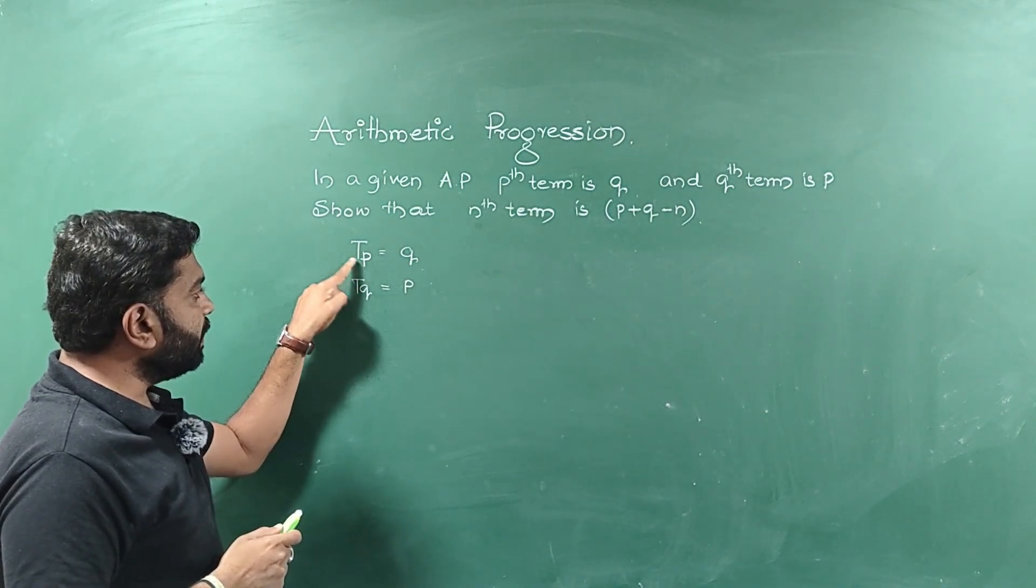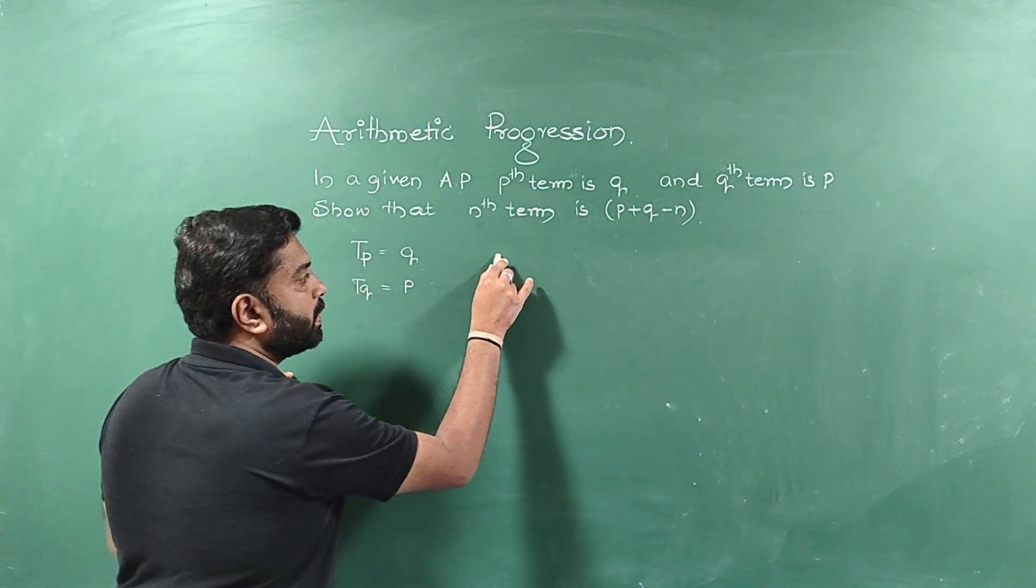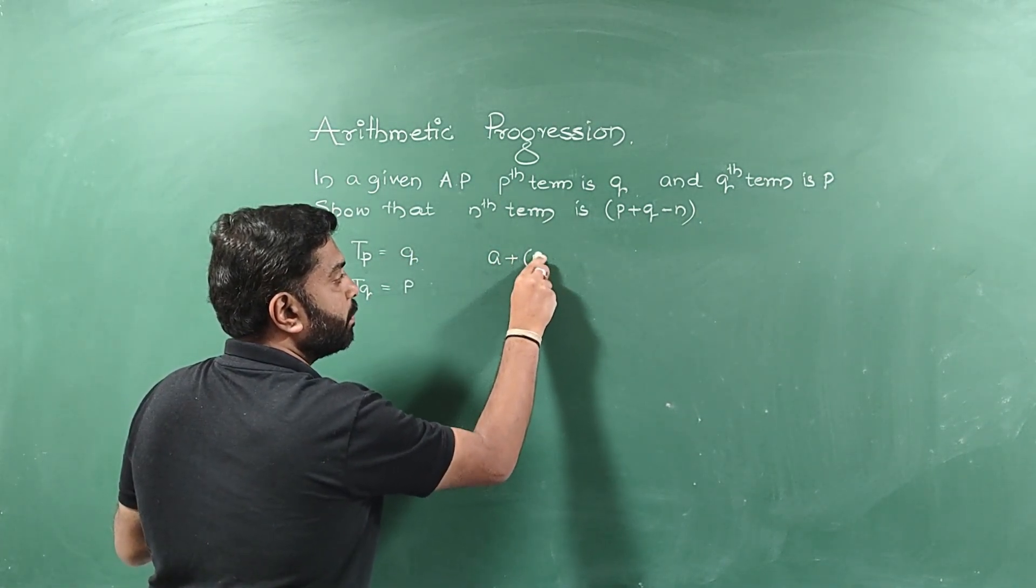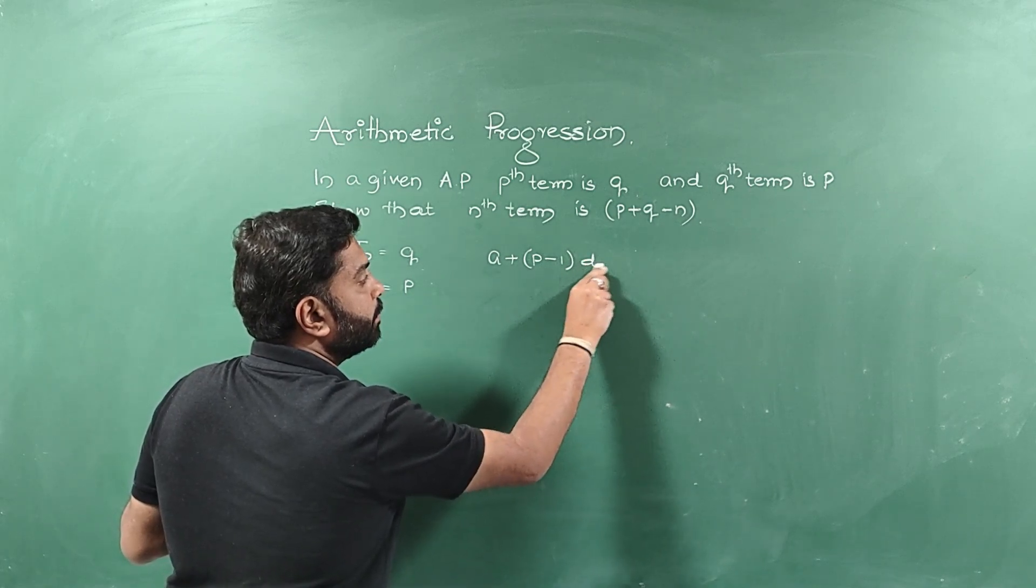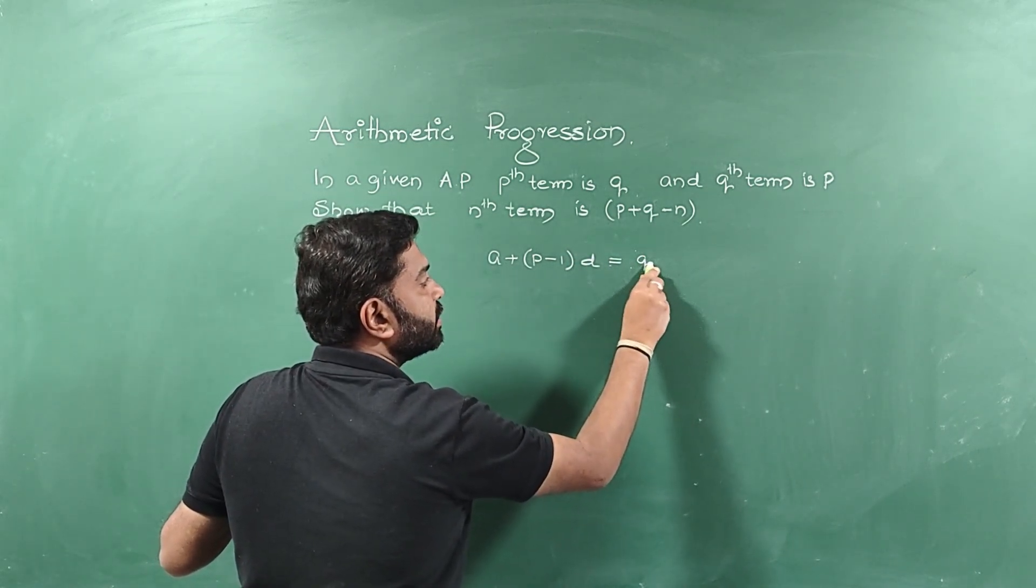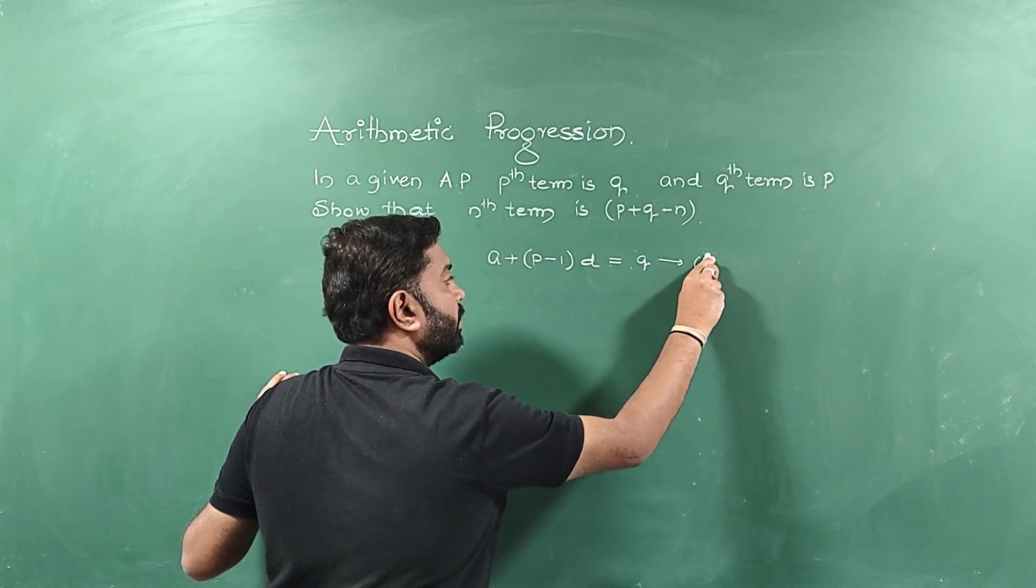In the same sense, Tp, Pth term means A plus, can I write, P minus 1 D is equal to Q. I call it as equation number 1.